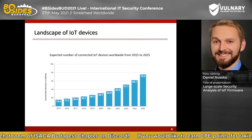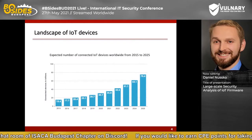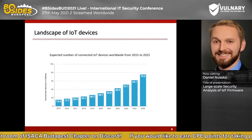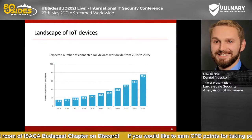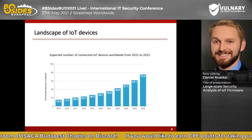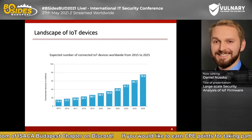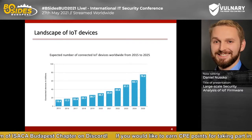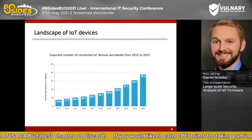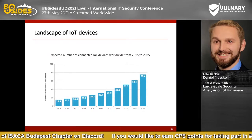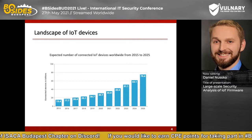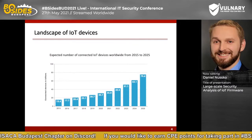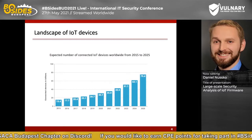IoT devices are more and more common and widespread. Today we have about 36 billion devices worldwide, and the number rises from year to year. So in 2025, we expect to have more than 75 billion IoT devices, and a lot of them are connected to the internet.